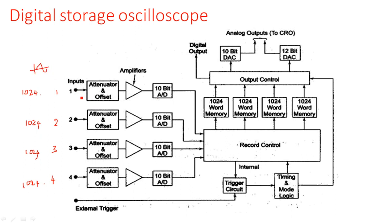The input data — a sinusoidal signal — is first given to the attenuator and offset. The attenuator eliminates noise and unwanted signals. After passing through the amplifier, the data is converted by the analog-to-digital converter. It is a 10-bit ADC since 2 to the power 10 equals 1024, converting the analog signal into digital data.